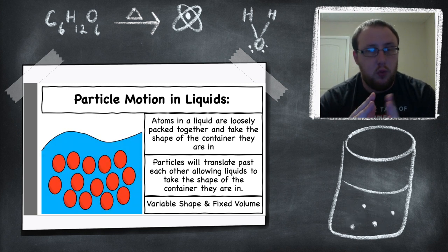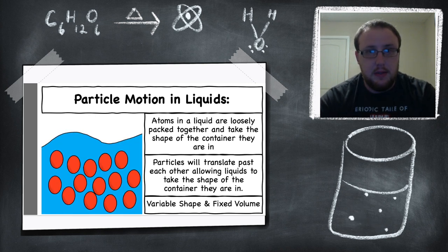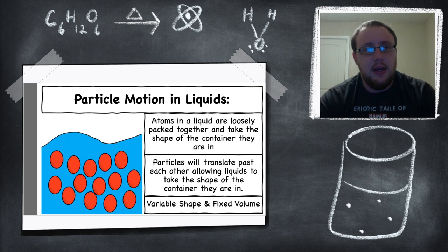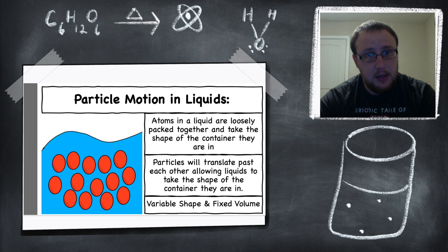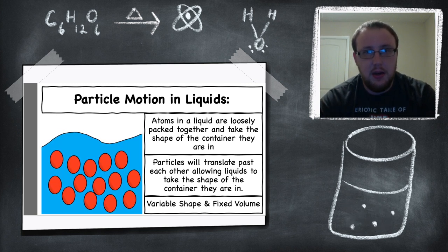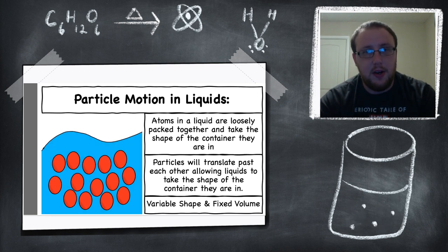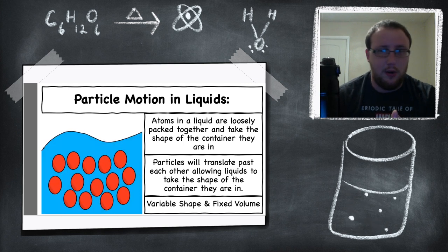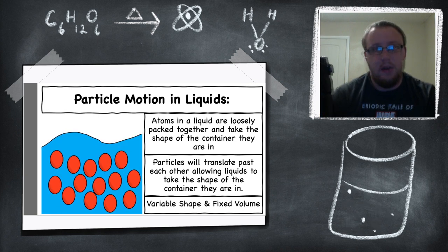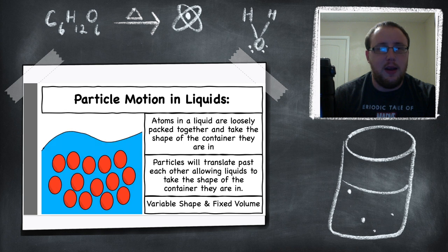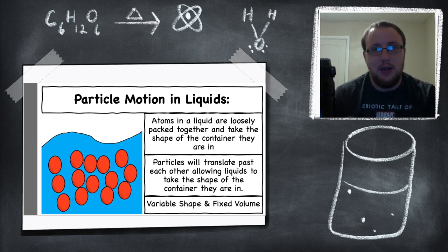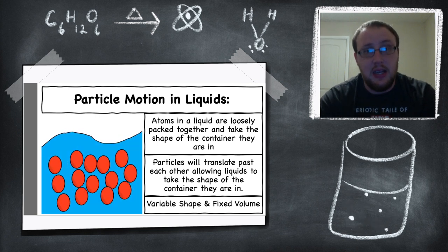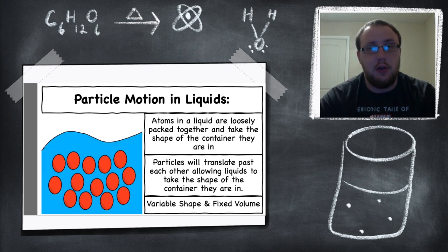Solids are really tightly bound together and don't allow a lot of movement. Liquids are loosely bound together — they still are somewhat bound together, but they translate past each other. This is what allows liquids to have a variable shape, taking the shape of the container. But because they are still partially bound to each other, they will still have a fixed volume. If I fill my thermos halfway with water — say 300 milliliters — and pour it into another cup, it's still going to be 300 milliliters. Liquids have a variable shape and a fixed volume because of their loosely bound particles.